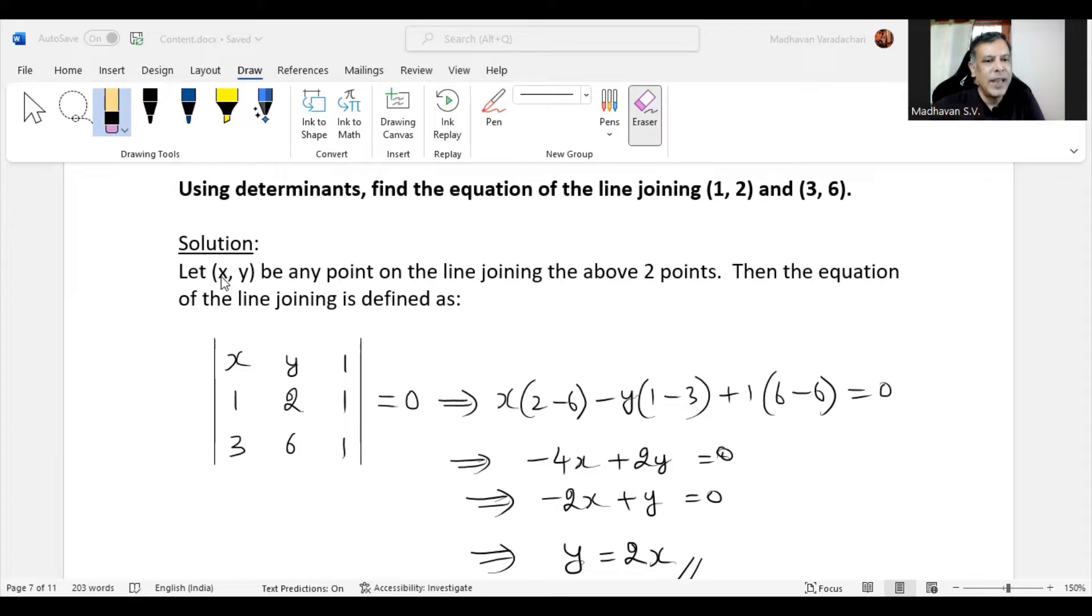To solve this we will be assuming x, y be any point on that same line joining the above two points. Then we can find the equation by using this determinant.